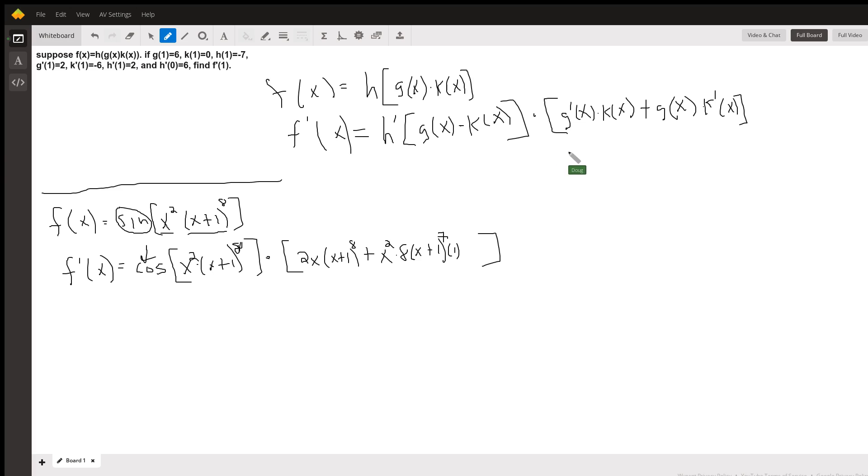Plus the first function times the derivative of the second. There's what h prime, or f prime, equals. Now let's see if we can evaluate. We want to find what f prime of 1 is.